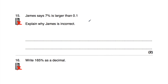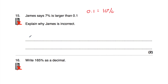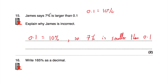Question number fifteen: James says that 7% is larger than 0.1, and we've been asked to explain why James is incorrect. We have a percentage and a decimal, so let's convert both to percentages. 7% is 7%, and 0.1 is equal to 10%. So James is saying that 7% is larger than 10%, which is not correct. 0.1 is 10%, so 7% is actually smaller than 0.1.